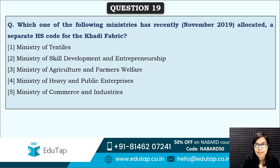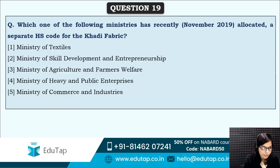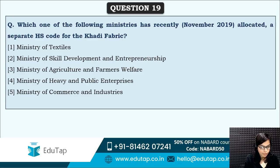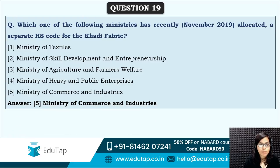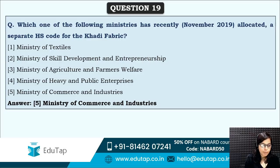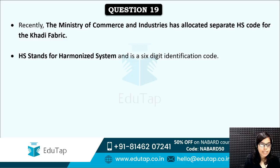Next: which of the following ministries has recently allocated a separate HS code for Khadi fabric? Earlier there was only one code for all textiles; now a separate code has been released for Khadi fabric. HS stands for Harmonized System. The correct answer is option five — the Ministry of Commerce and Industry has released this separate HS code for Khadi fabric.